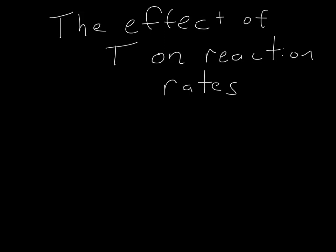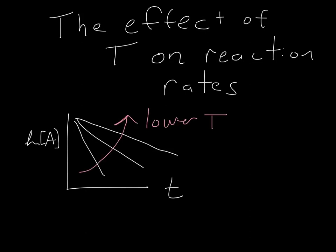If we look at a first-order reaction and graph the log of the concentration versus time, we know the slope of this graph will be the rate constant. If we graph the log of concentration versus time for increasing temperature, we'd find that at high temperature we'd get a very high slope, and at low temperature we'd have a low slope.